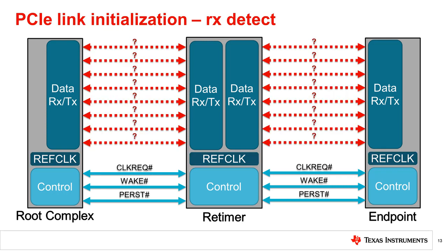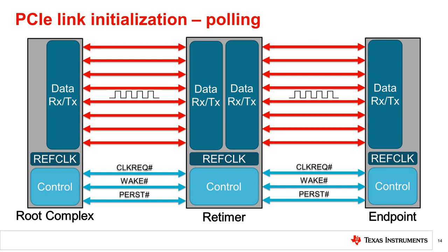After all devices in a PCIe link are powered and have a reference clock provided, a PCIe device will have a receiver-detect circuit on each lane that will allow it to determine if it has a link partner to pair with. Assuming that the PCIe RX detect circuit sees the other device, each individual lane will then begin to transmit serial data at 2.5 gigabits per second. This is the lowest and most fundamental PCIe data rate, which was specified in the original PCIe 1.0 specification. PCIe 1.0, also called PCIe Gen1, is compatible with any PCIe device, so every PCIe link will begin with the same link initialization process.